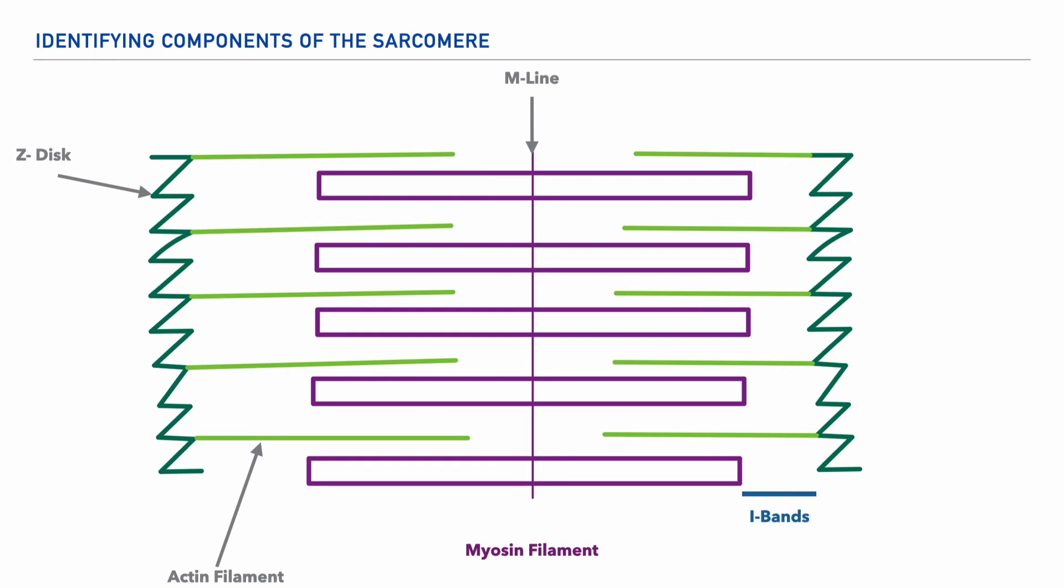And next to this, moving medially, is the space where the actin filament and myosin filament overlap, and it is referred to as the A-band.